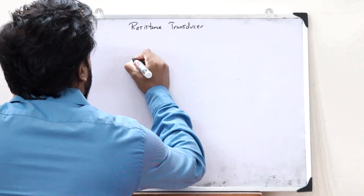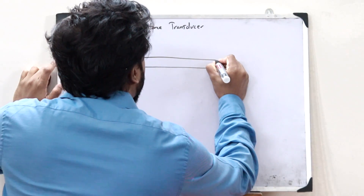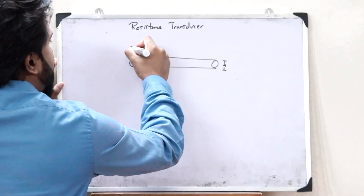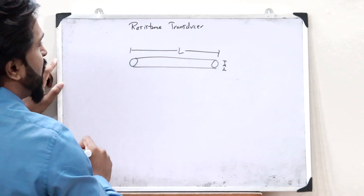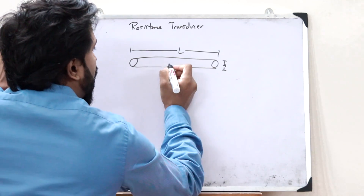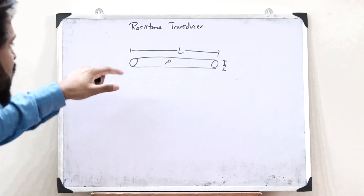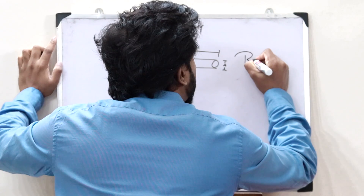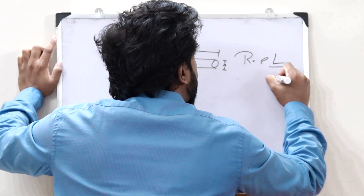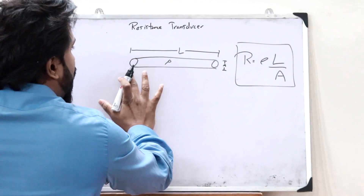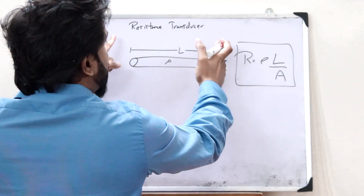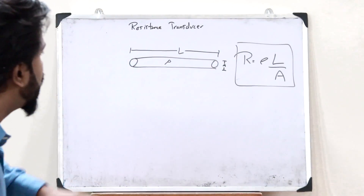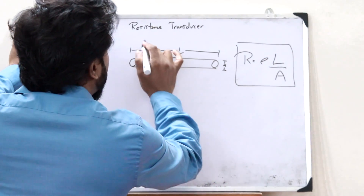So first, let us consider a particular conductor like this. Let the cross-sectional area of this conductor be A and the length of this particular conductor be L. And now let the resistivity of this particular conductor be rho. Then the resistance of this particular conductor is given by the formula R = rho × L / A, where rho is the resistivity, L is the length, and A is the area of cross-section of this particular conductor.